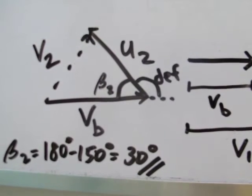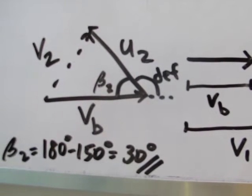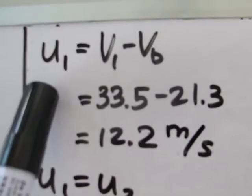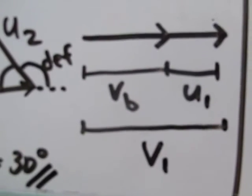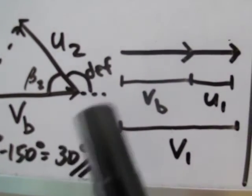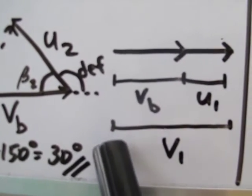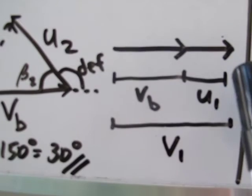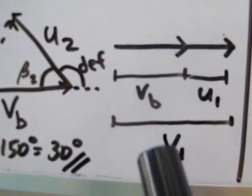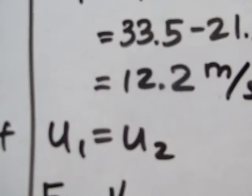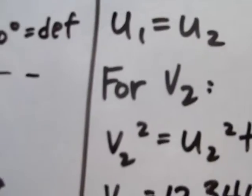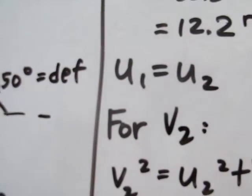Let's first solve u1, the relative velocity. u1 equals v1 minus vb. Since v1 and vb are in the same direction, u1 is just their difference: 33.5 minus 21.3, giving us 12.2 meters per second. Since u1 equals u2, we also know u2 is 12.2 meters per second.